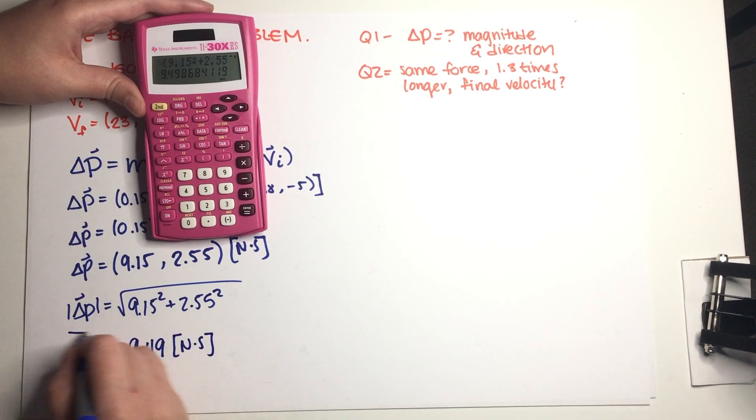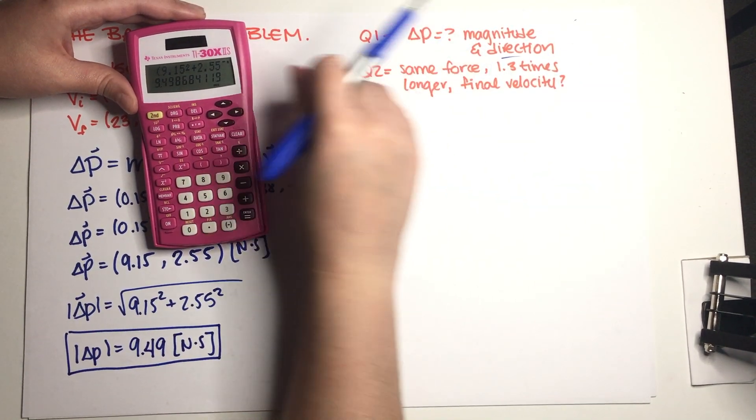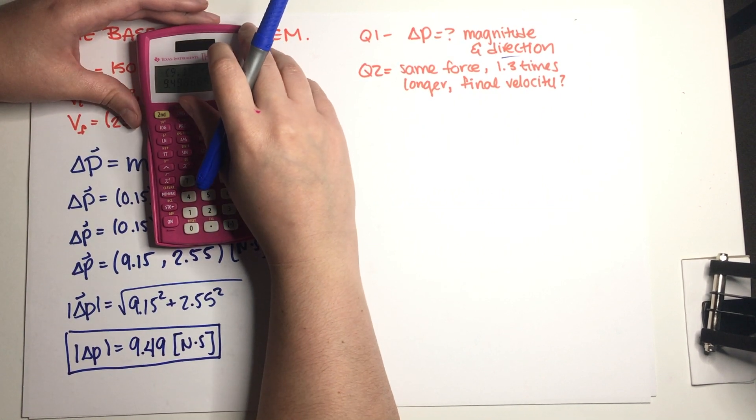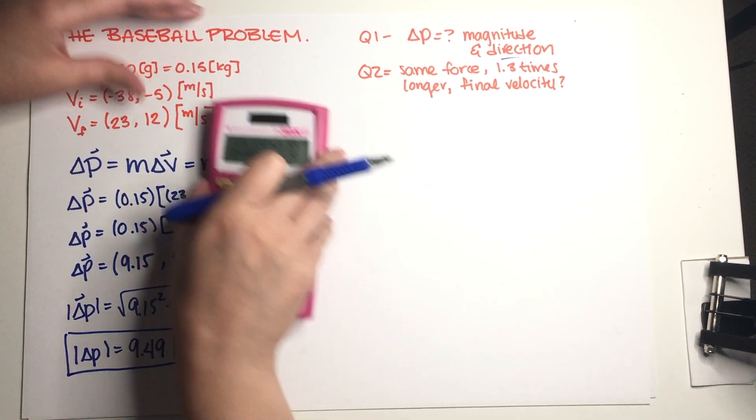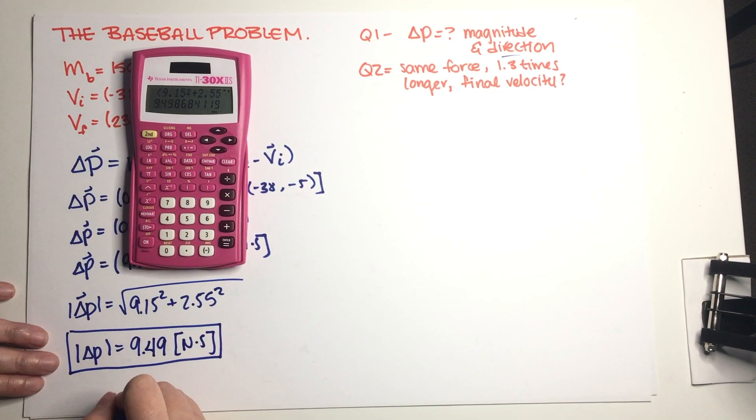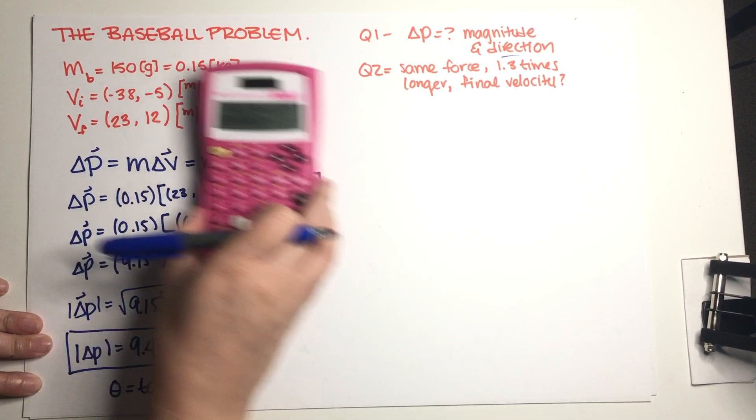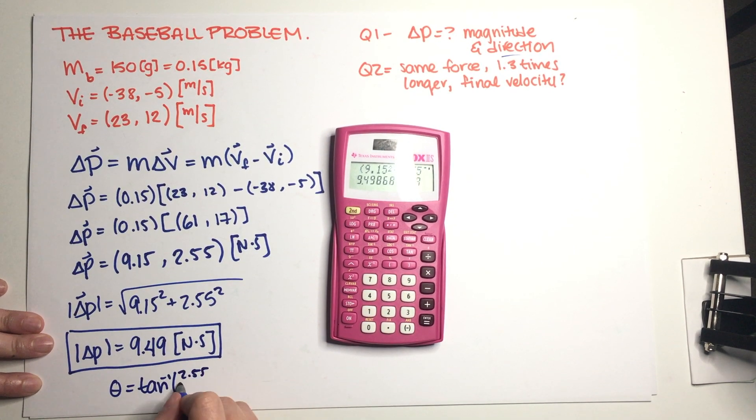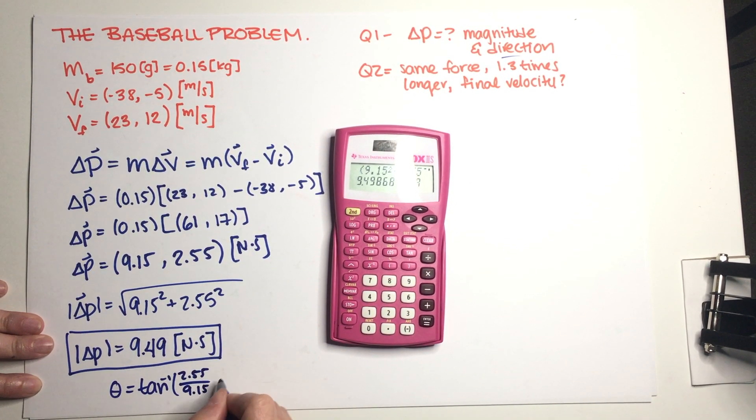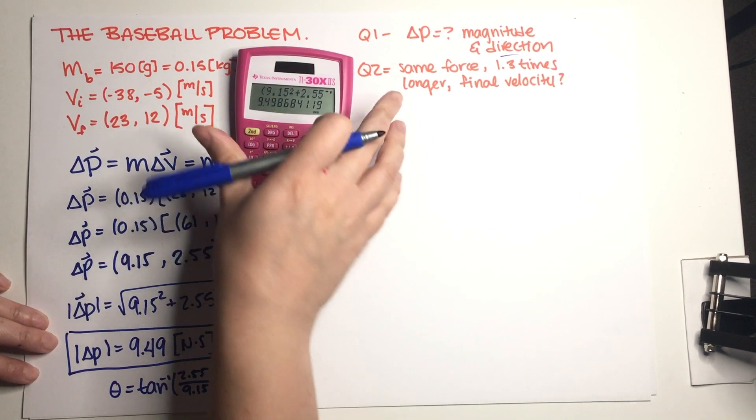So now we also need a direction, which means basically just get an angle out of this. And we know because of SOHCAHTOA that the angle we can just basically do tangent inverse of y component over x component.